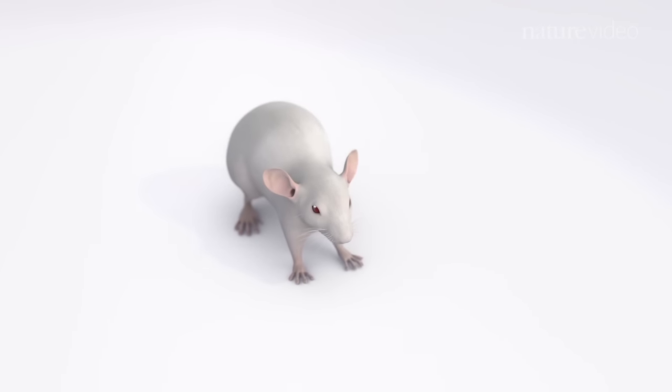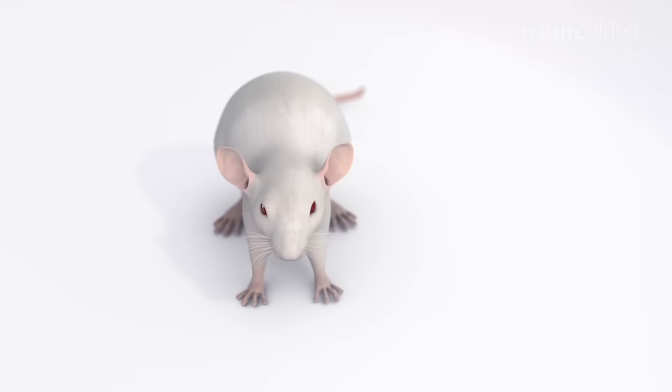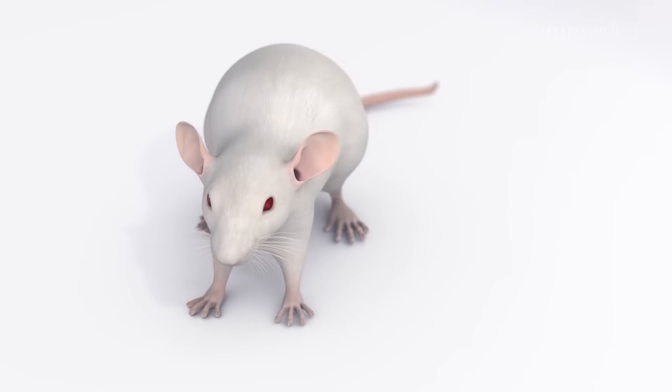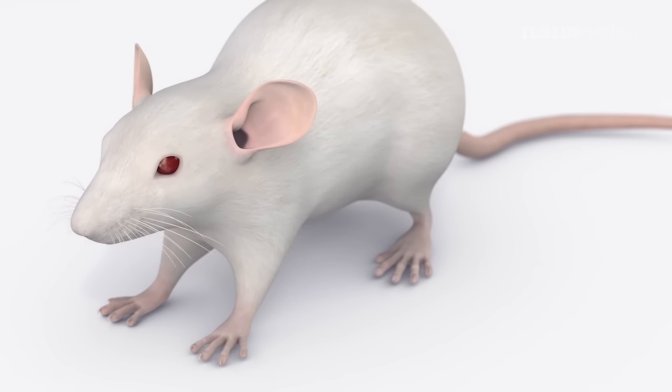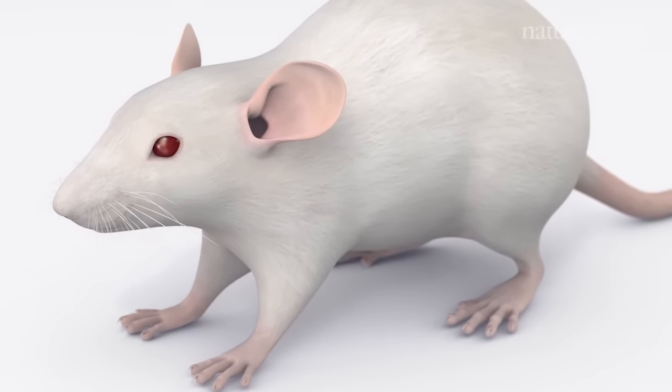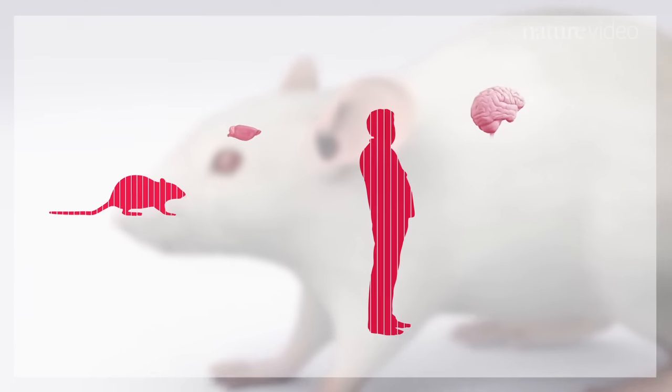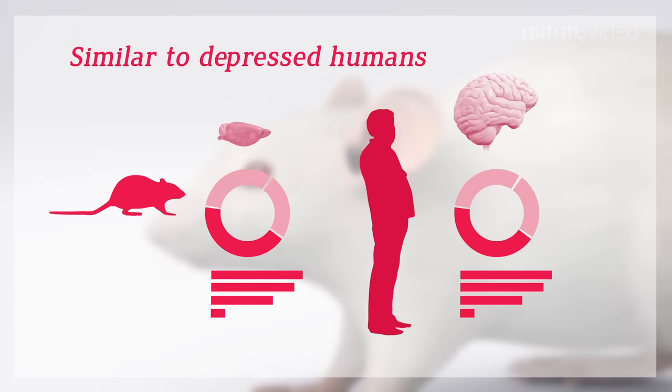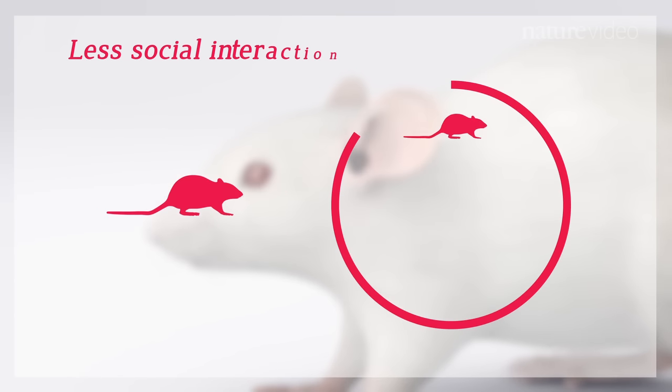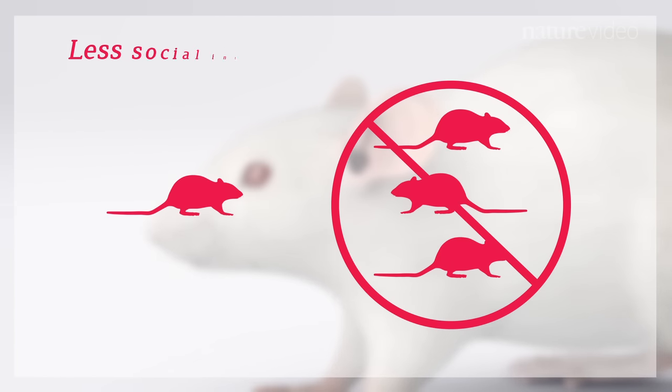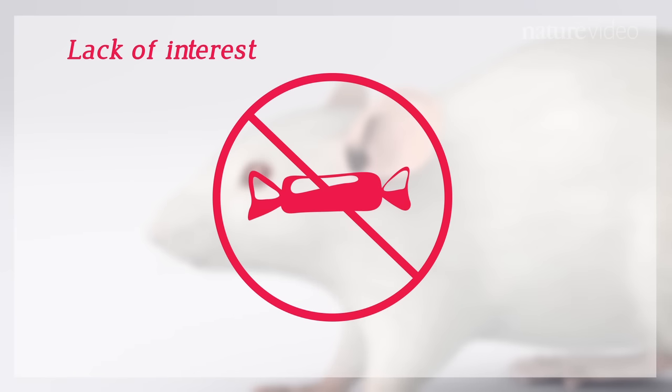Animal models such as mice are critical in helping us understand the cellular and molecular changes underlying depression and develop better treatments. Although it's impossible to know if a mouse is depressed, mice subjected to chronic stress show some symptoms similar to depressed humans, such as anxiety-like behavior, less social interaction and a lack of interest in normally pleasurable activities.